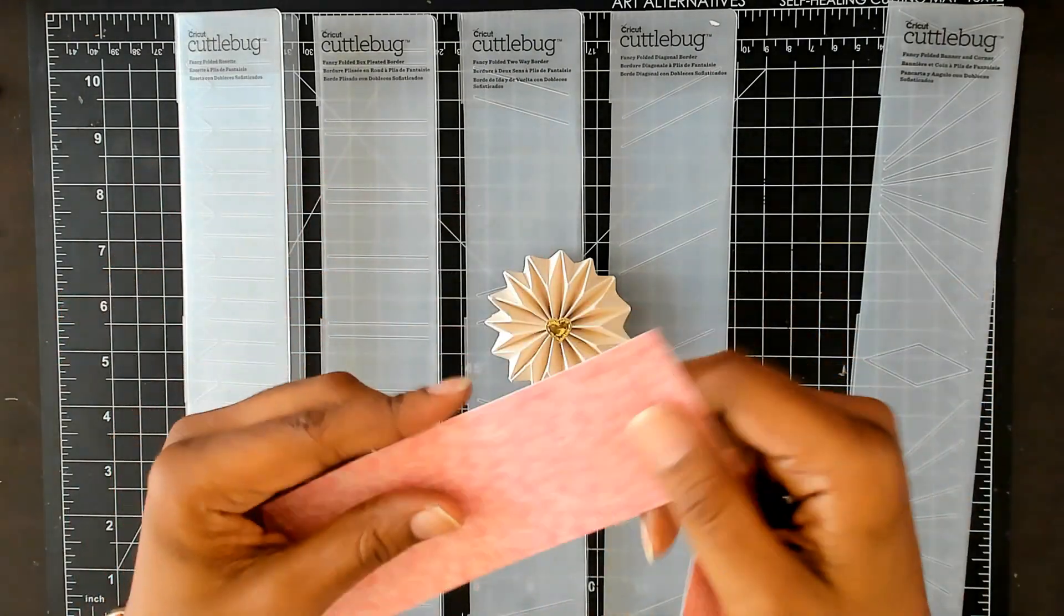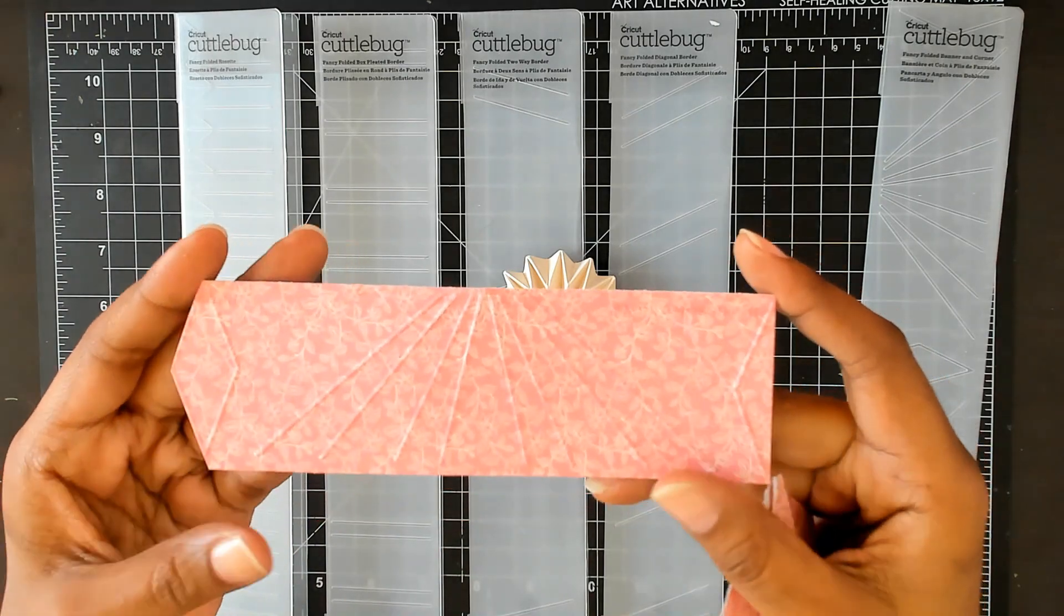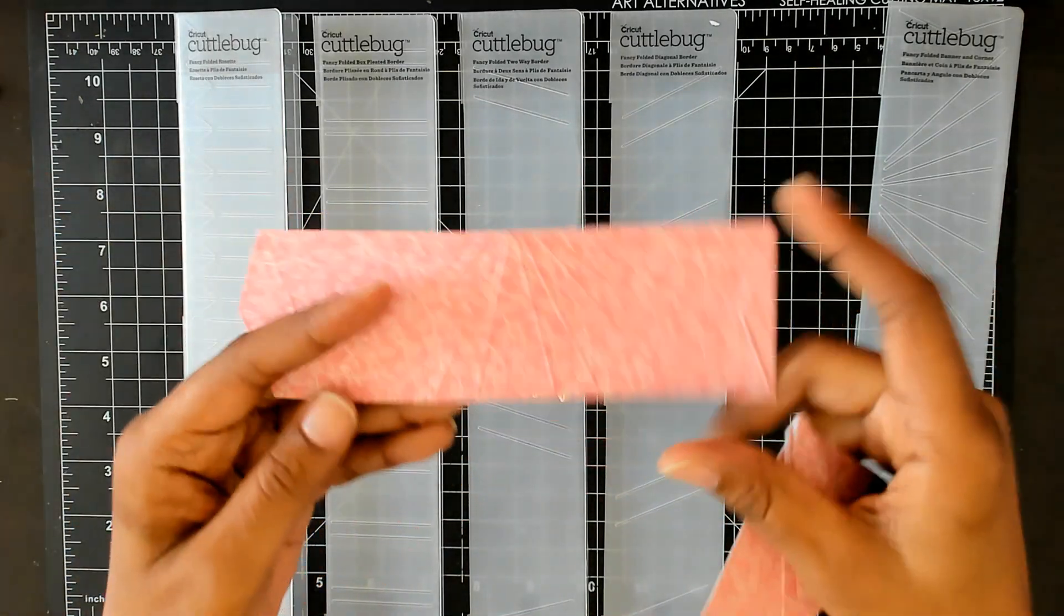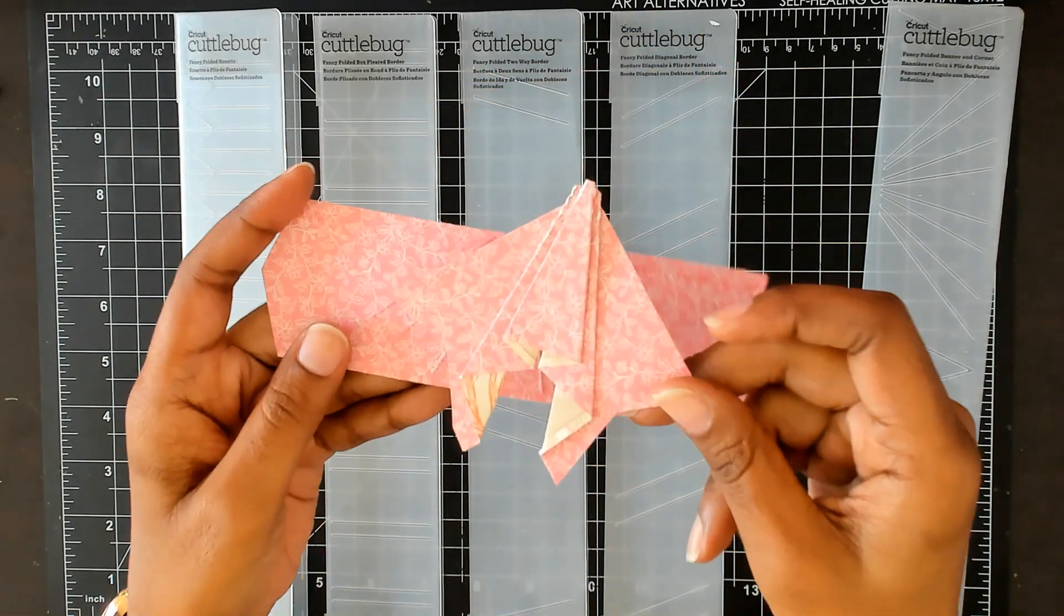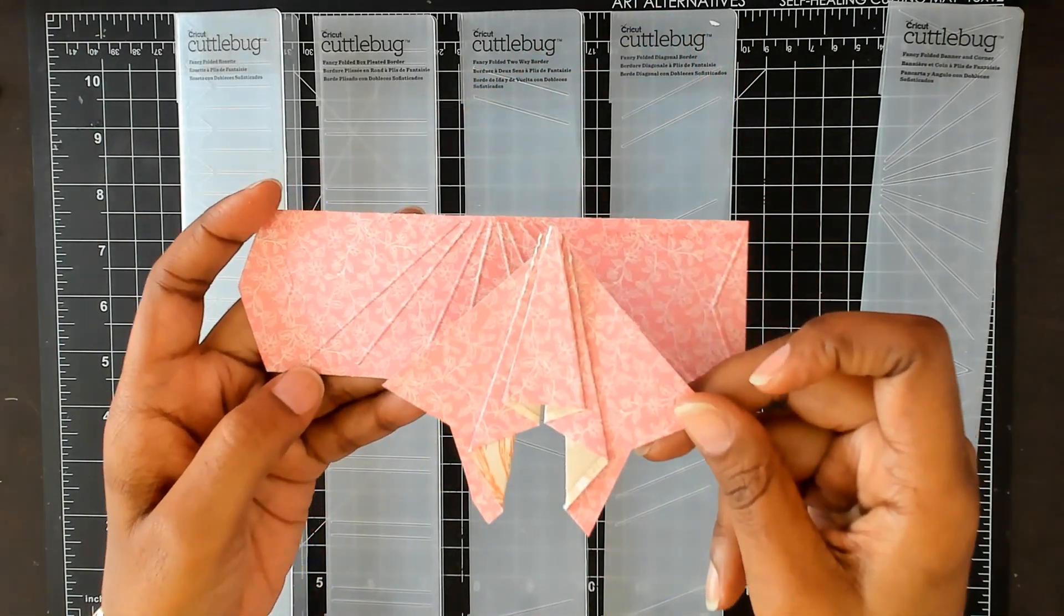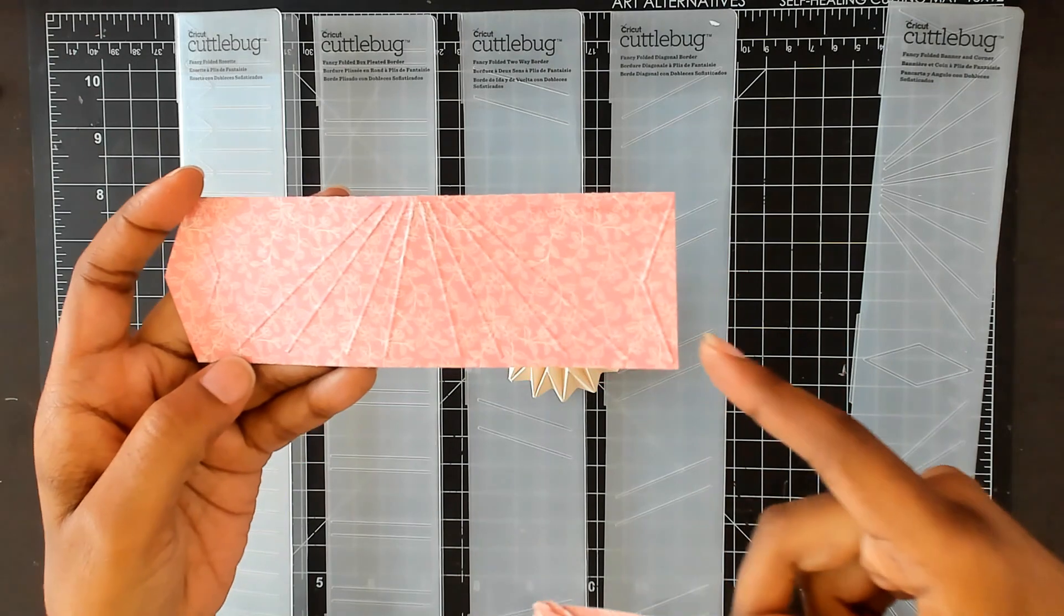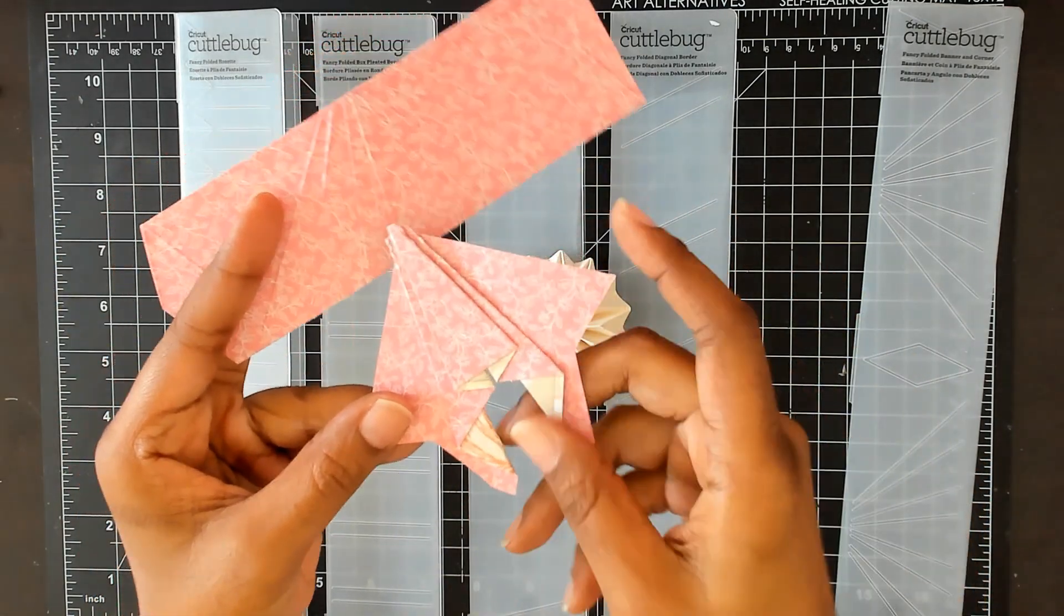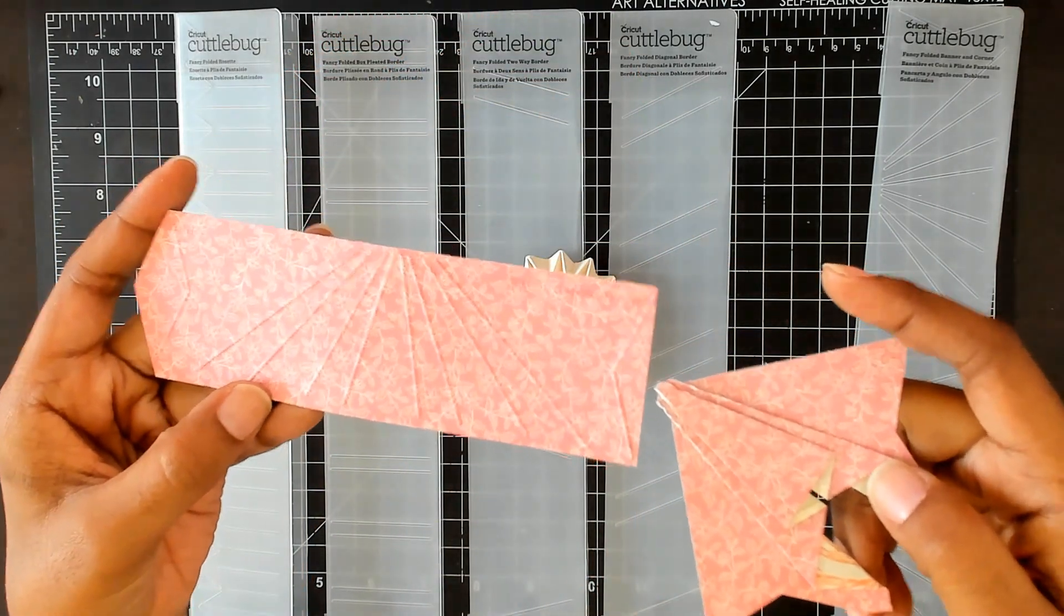So when you use that, the strip looks like this. There's another set that went here that I've already cut out to make this one. So this is what this one looks like. And then you would cut here to get this effect right here, so it already has score lines and everything for you.